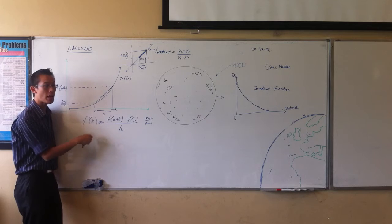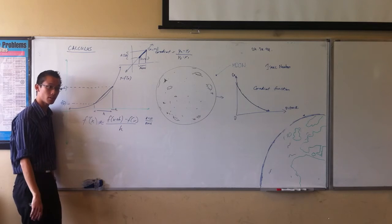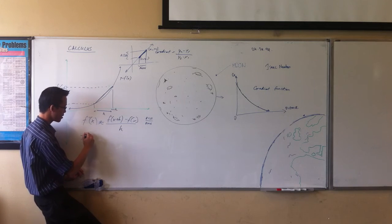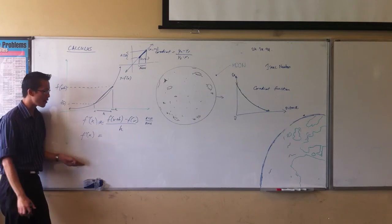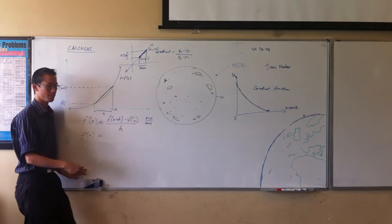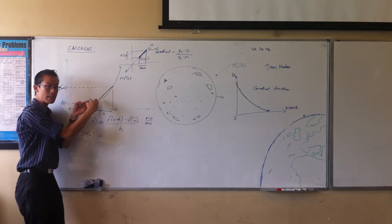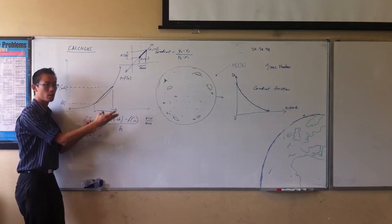Then, I wouldn't be approximate. Then, I would actually be equivalent. So, he said, look, this thing, this f dash is gradient. I'll be equal to that if I can make this thing for two points that are really, really infinitesimally close together.